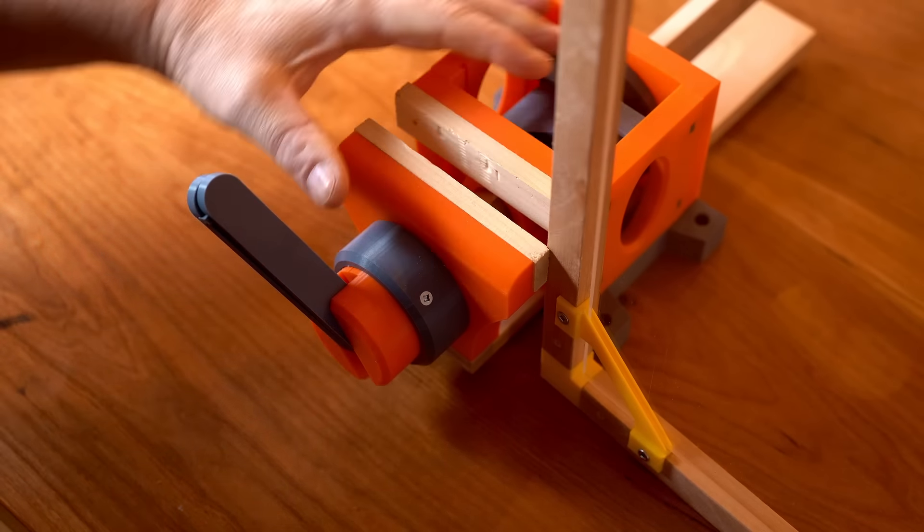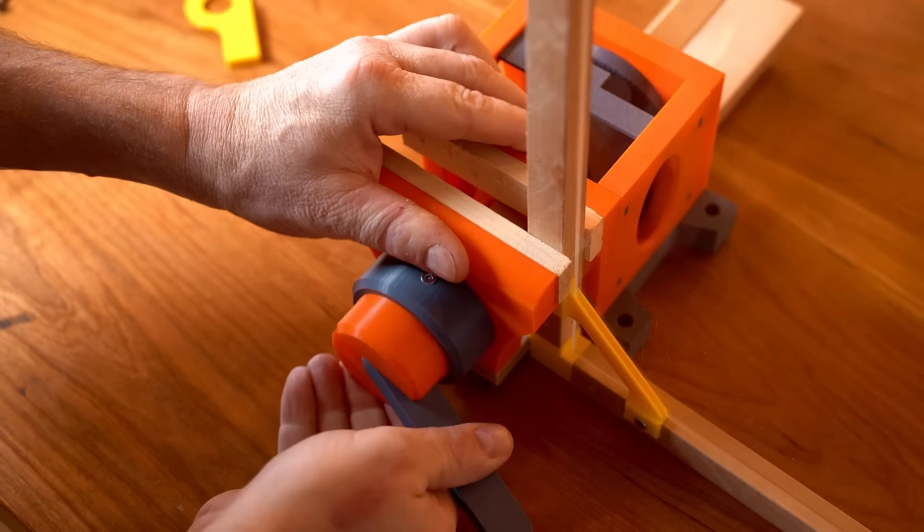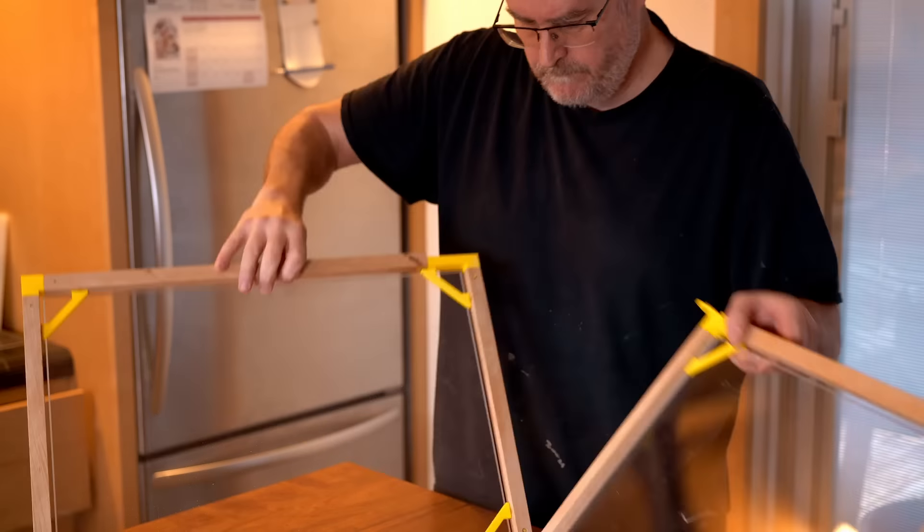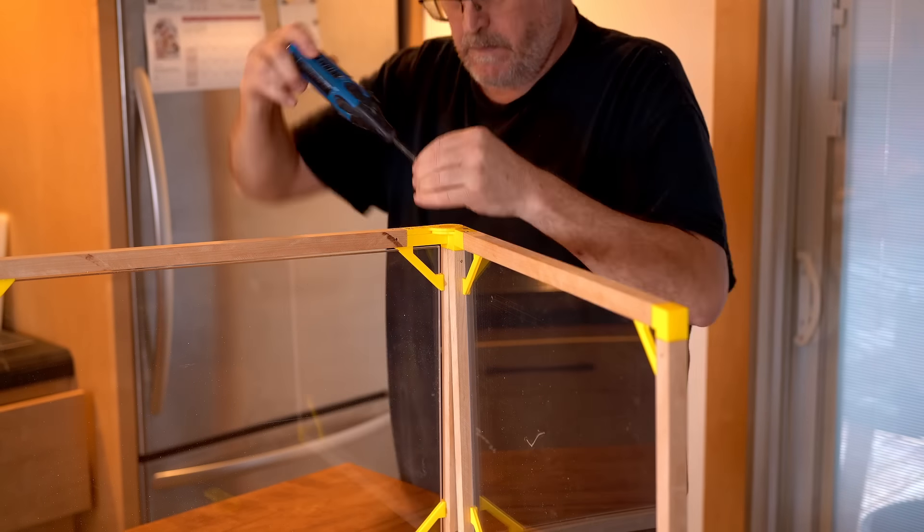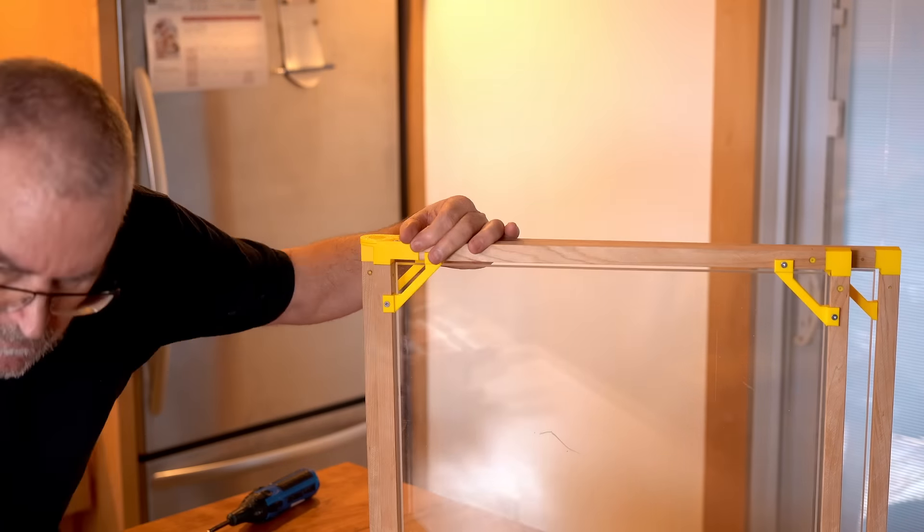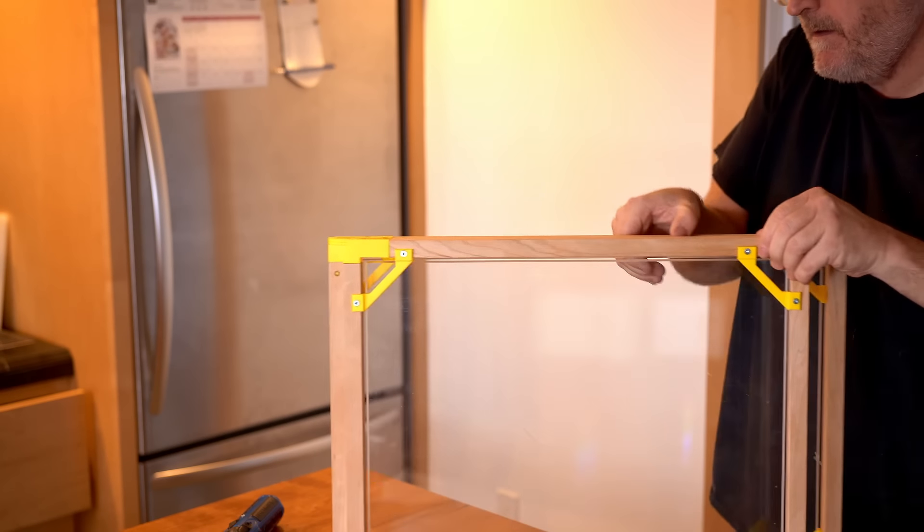Once again, I'll clamp that in my super vise. And here I'm attaching some interesting 3D printed parts. These are blade hinges, and they go on the corners of the top and front, so the hinge is like that.